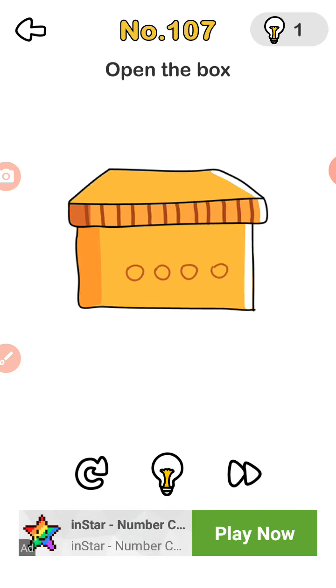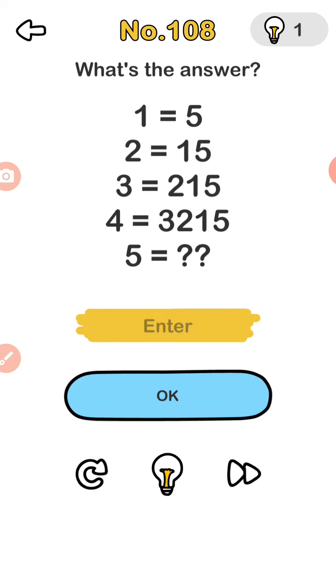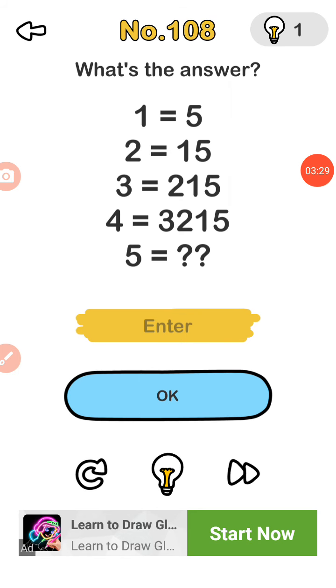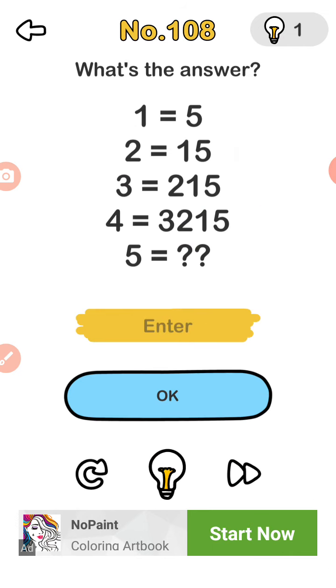Open the box, okay this is what. Okay guys now I have only one I didn't need to get, now let's play. What is the answer? 1 = 5, 2 = 15, 3 = 215, 4 = 3215. 5 equals to one?